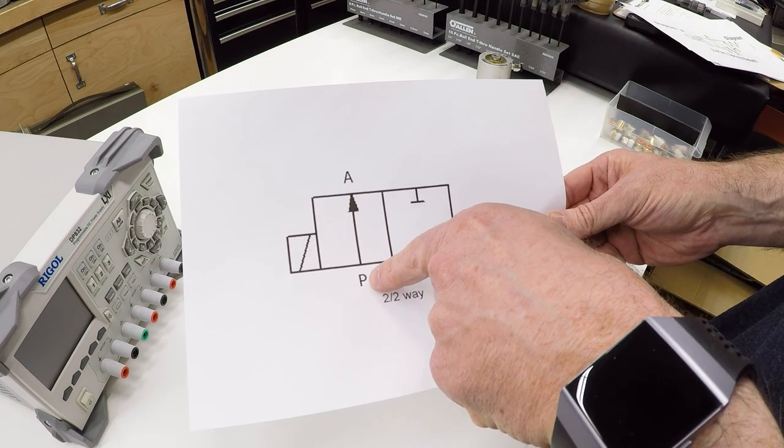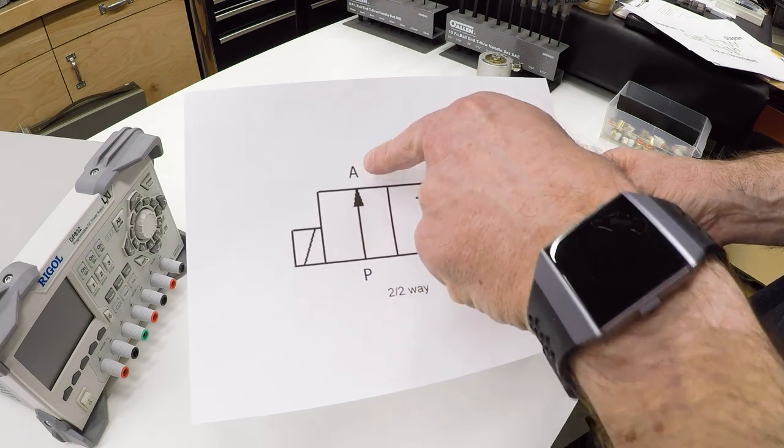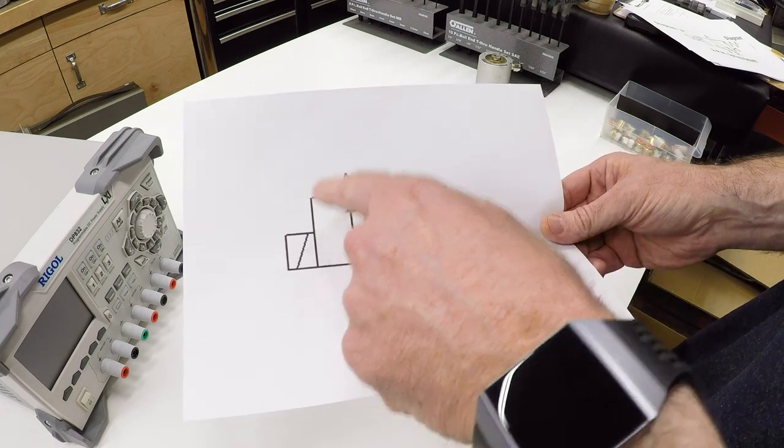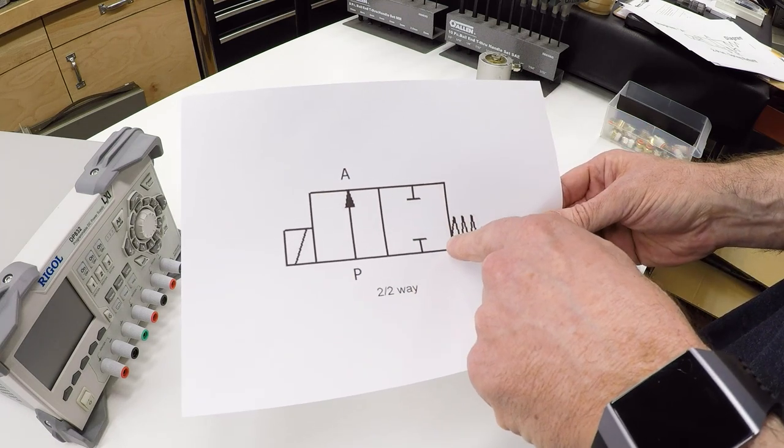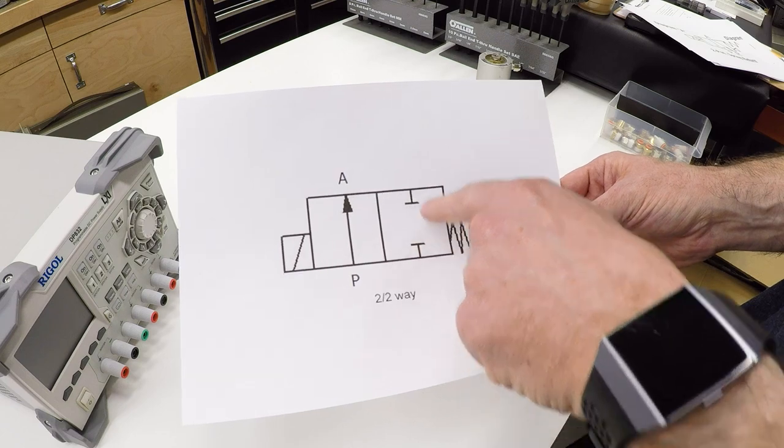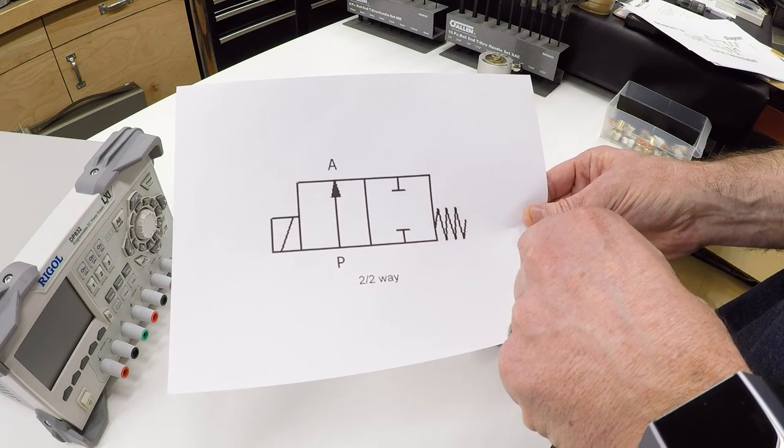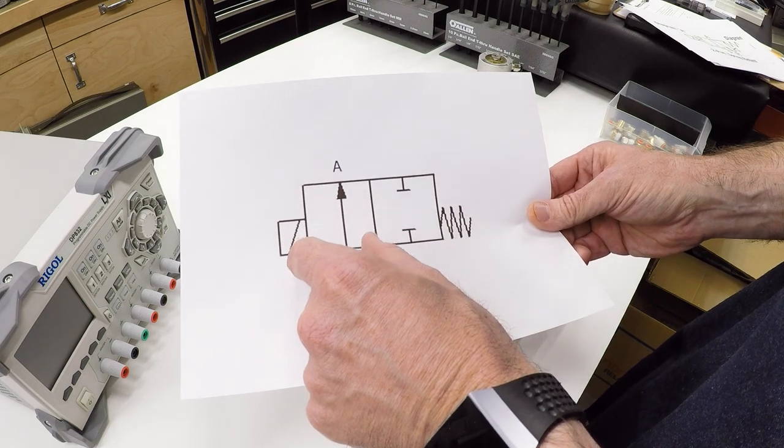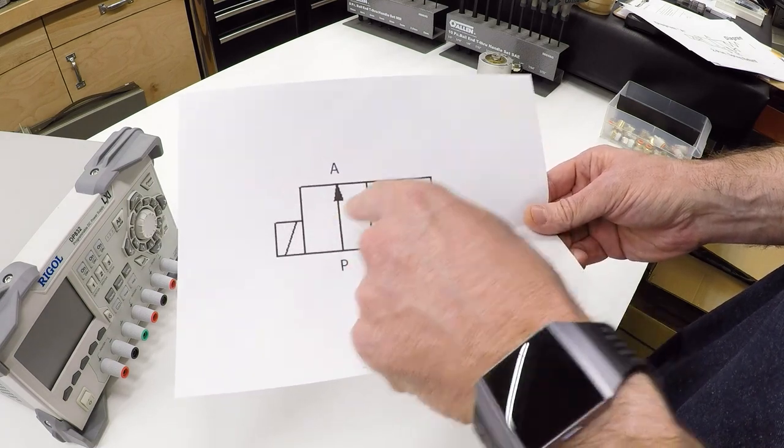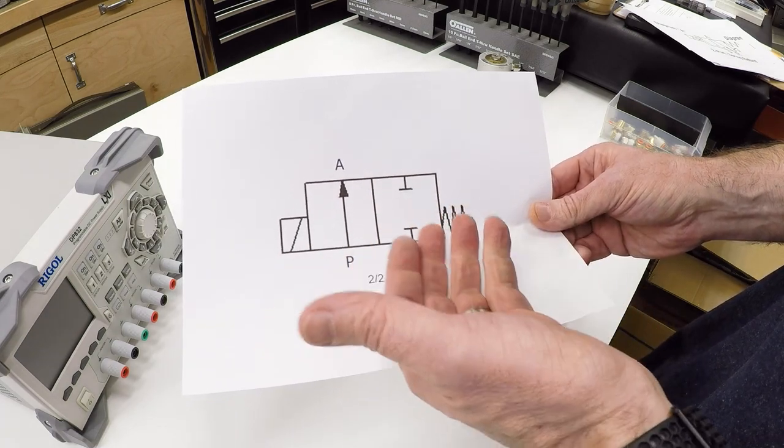This arrow denotes that in this state, the air is allowed to go from the P port out through the A port. In the other state of the valve, it is closed, and both of these ports are blocked. So air can't flow either direction through the valve. You have the two ports and the two different states it can be in, hence a 2-2 valve.